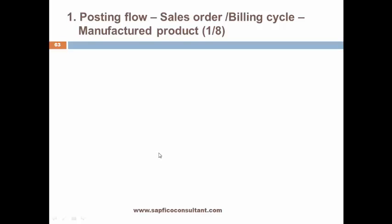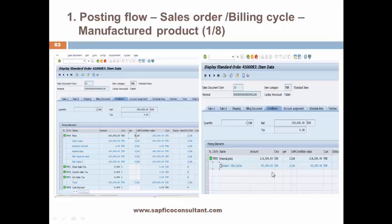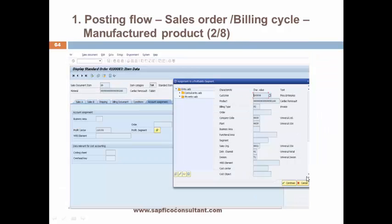Now let us see the posting flow — the sales order billing cycle for a manufactured product. Here is the sales order with conditions: PR00 for the price and VPRS for the cost. In the account assignment of the sales order, the characteristics are automatically populated based on the product-customer combinations, and all characteristics are automatically copied into the profitability segment.